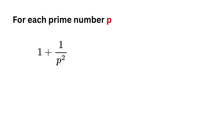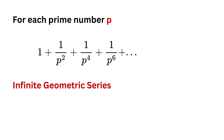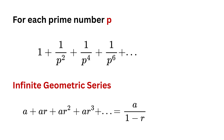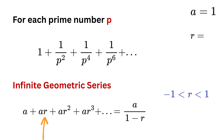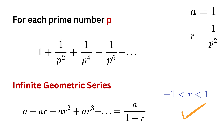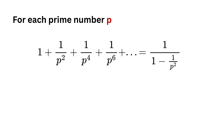He came up with this amazing idea. For each prime number p, write its geometric series: one plus one divided by p squared plus one divided by p to the fourth plus one divided by p to the sixth, and so on. For any infinite geometric series with first term a and common ratio r, the sum is a over one minus r, provided r lies between minus one and one. Since p is greater than one, r equals one over p squared is always less than one, so the sum is one divided by one minus one over p squared.